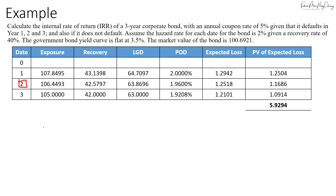Now let's calculate what if the bond defaults in year two. If the bond defaults in year two, you will recover forty-two point five seven nine seven. Since it didn't default in year one, you would have received a coupon of five dollars. In year two you get forty-two point five seven nine seven as the recovery amount, and there's nothing you receive in year three. Your investment amount remains one hundred point six nine two one.